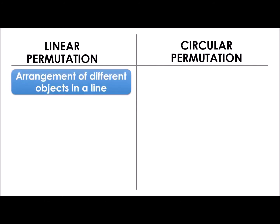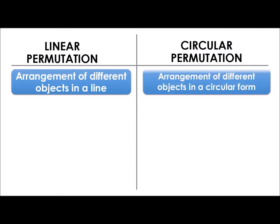Under the linear permutation, it pertains to the arrangement of different objects that forms a line — kaya nga tinawag na linear permutation. And in circular permutation, arrangement of different objects in a circular form. I would like to emphasize here the term 'different.' Pagka linear and circular ang pinag-uusapan, magkakaibang bagay.